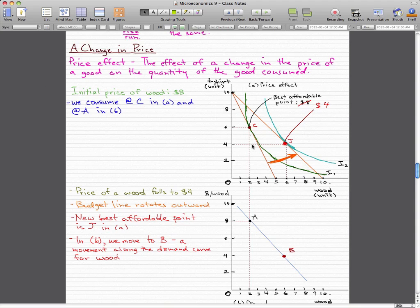Let's say that our initial price of wood is $8 like before in our past example, and at $8, we consume at point C in figure A, which is this top graph, and at point A in figure B, which is this bottom graph.